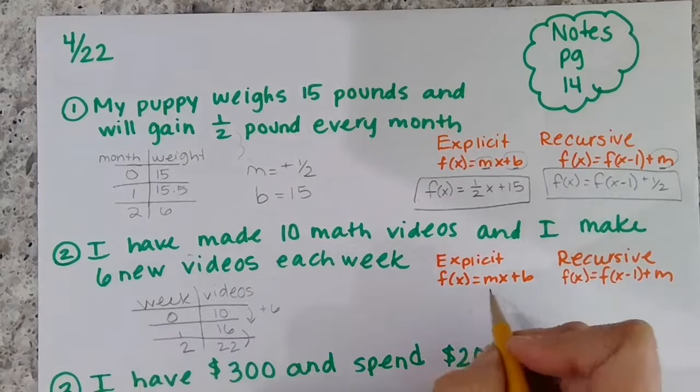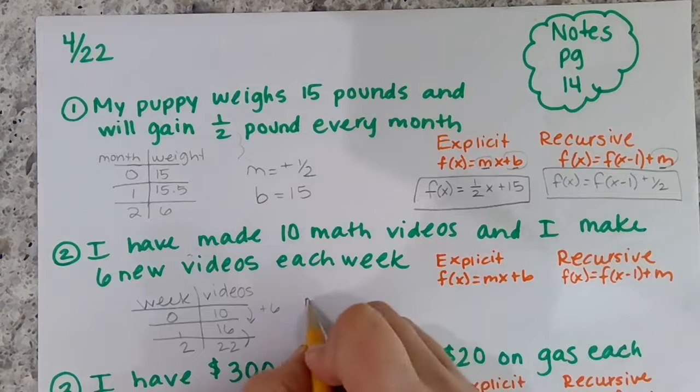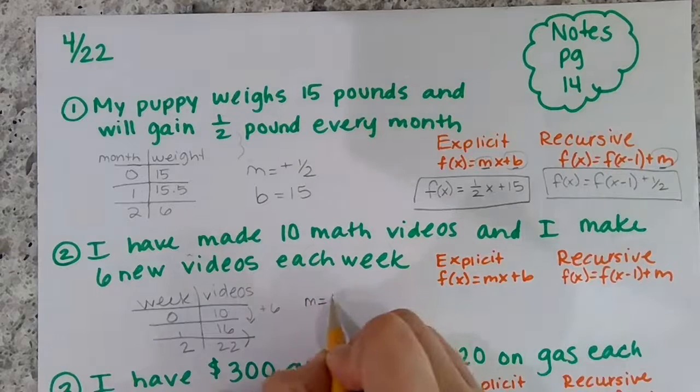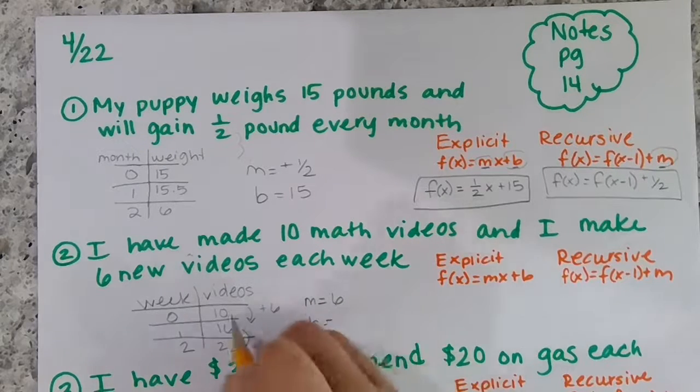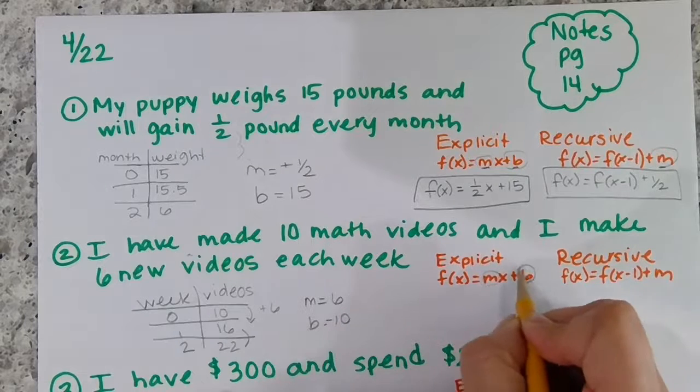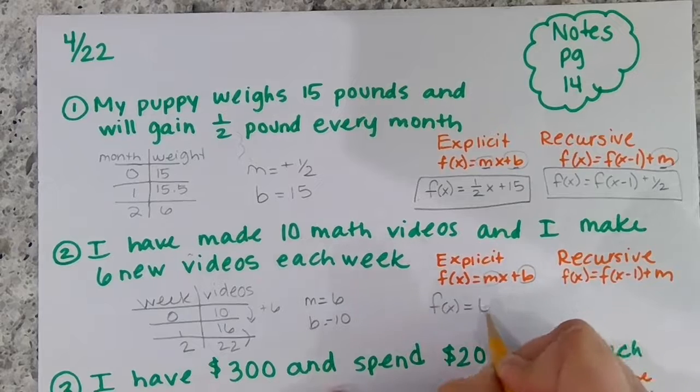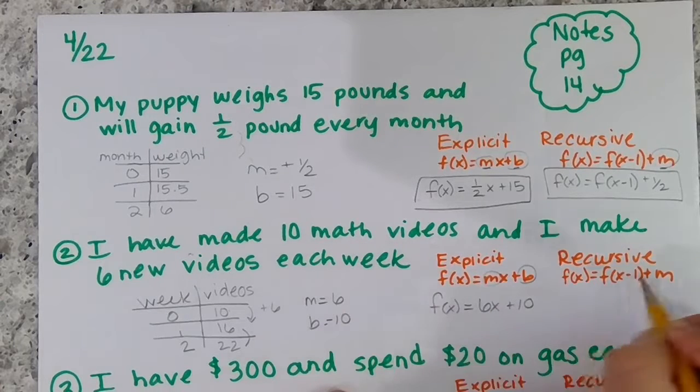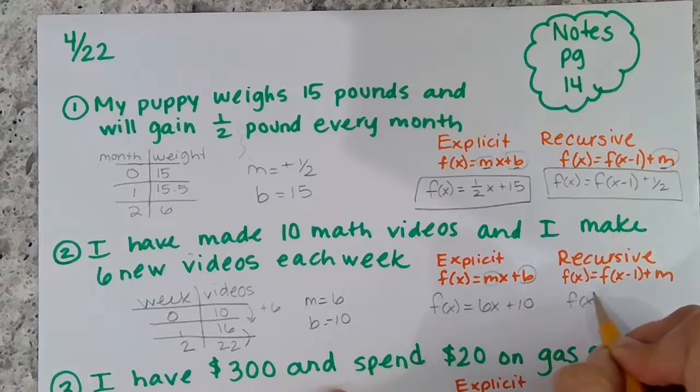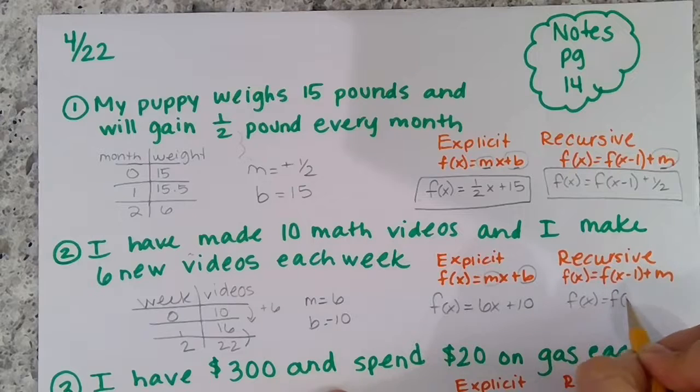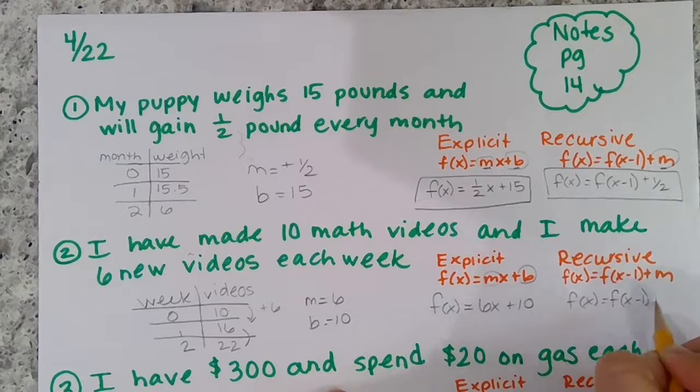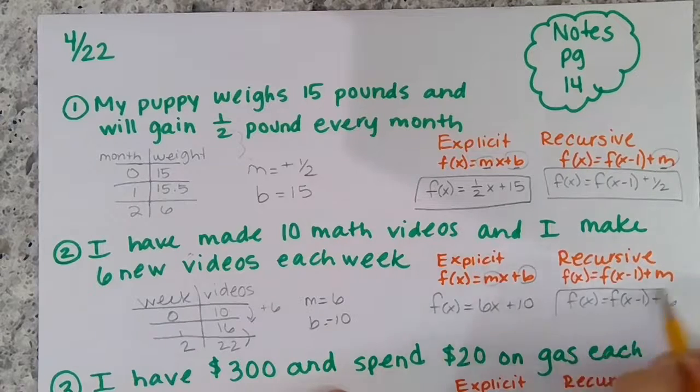So your explicit is... well, let's find our information. Our slope is 6, our starting value is 10. So again we're only plugging values in here: f(x) equals 6x plus 10. Recursive: f(x) equals the previous term, that's f(x minus 1), plus 6.